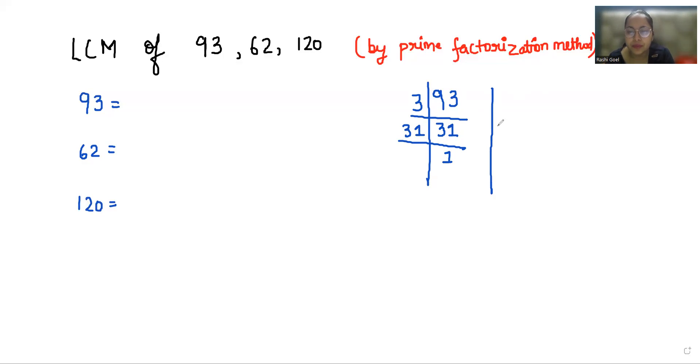Now comes to 62. We'll start with 2. This gives us 31. Again we'll go with 31. This gives us 1.